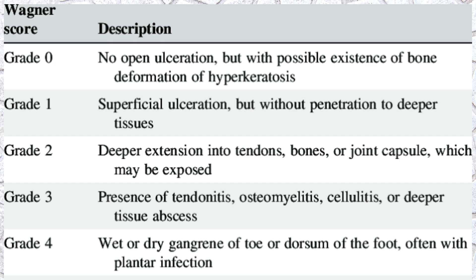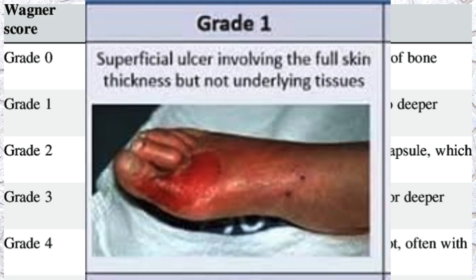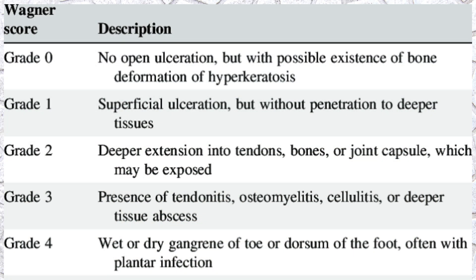Grade 1 says superficial ulceration, but without penetrating deep tissue. So it makes sense that Grade 1 means there is an ulceration present, but it is not going to penetrate any deep tissues.